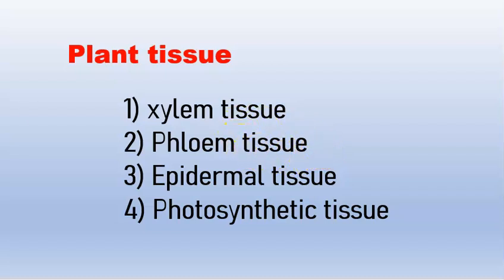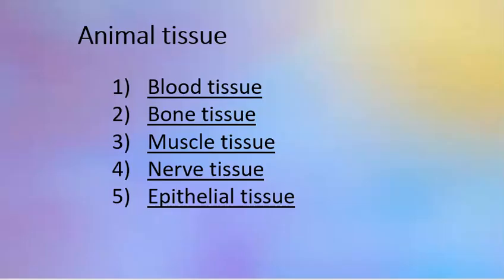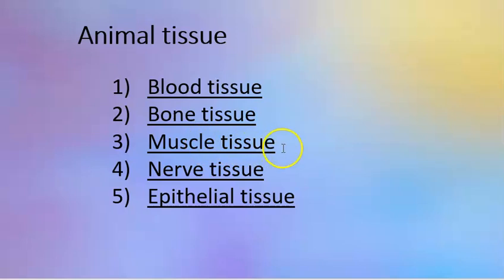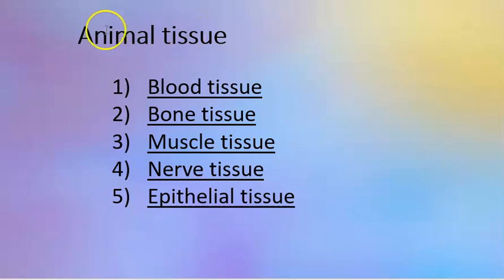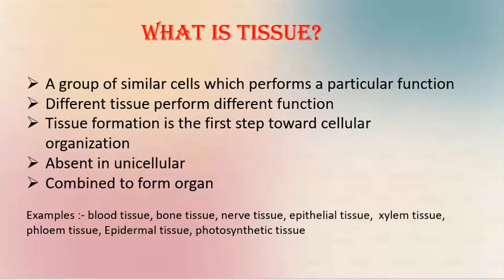Animal tissue is the whole body. This includes blood tissue, bone tissue, muscle tissue, nerve tissue, and epithelial tissue. This is the whole animal tissue.